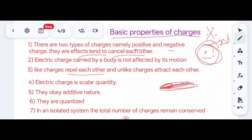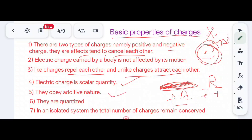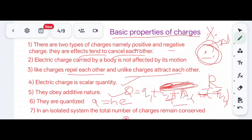Like charges repel each other and unlike charges attract each other. So positive-positive or negative-negative charges repel, while positive-negative charges attract. Electric charge is a scalar quantity. Charges obey the additive nature — that is, net charge equals q1 plus q2 plus q3 and so on.